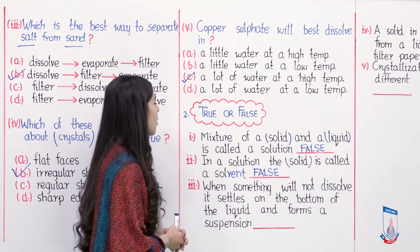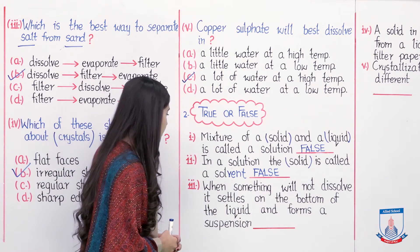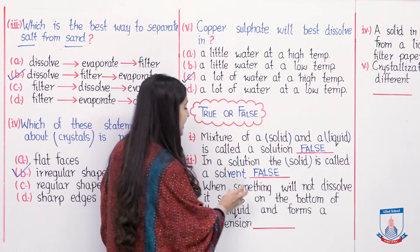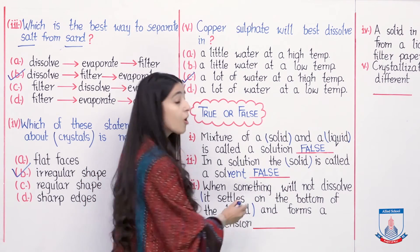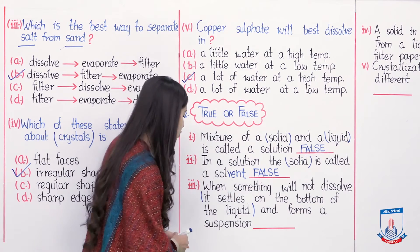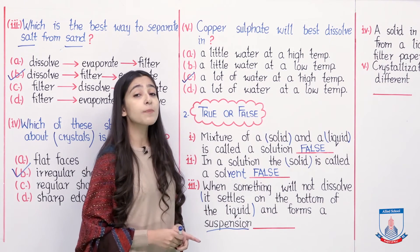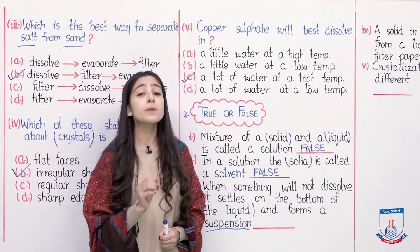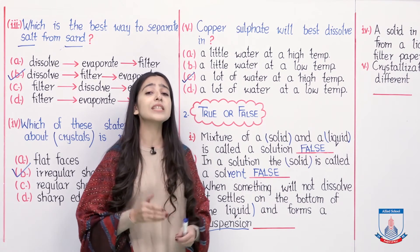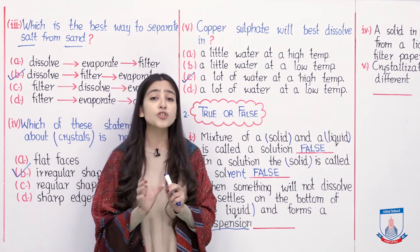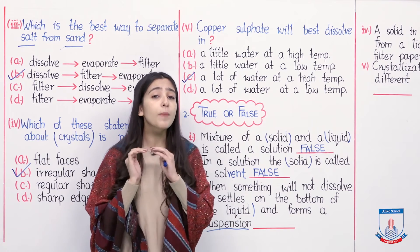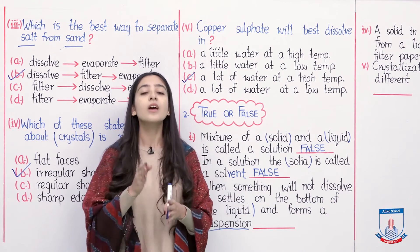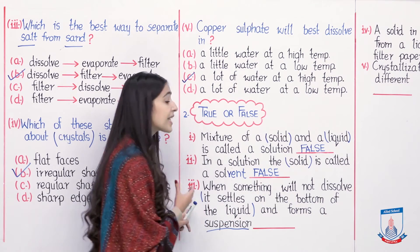Statement number 3: when something does not dissolve, it settles on the bottom of the liquid and forms a suspension. When solid particles are not dissolved in our liquid, the insoluble particles remain in it. If we don't stir that mixture and keep it still, the solid particles will settle down to the bottom. These settled particles are called sediment and the whole mixture is called suspension. Statement number 3 is absolutely correct — true.